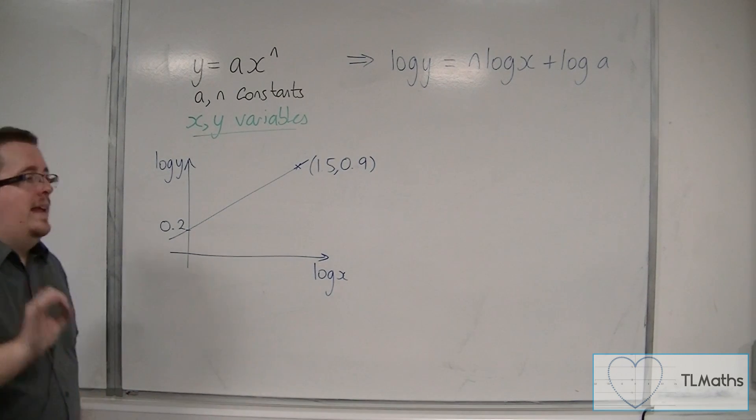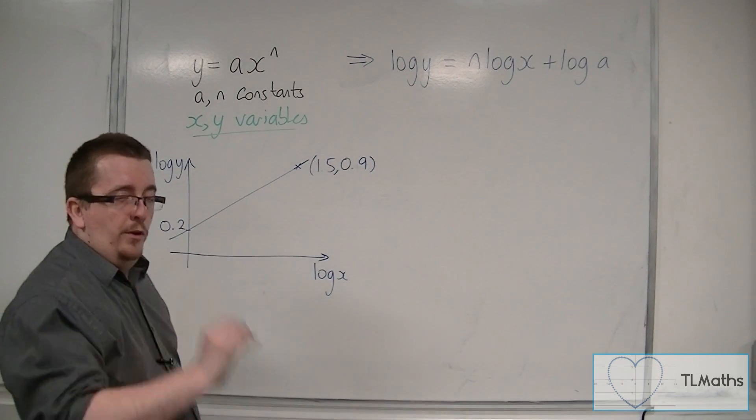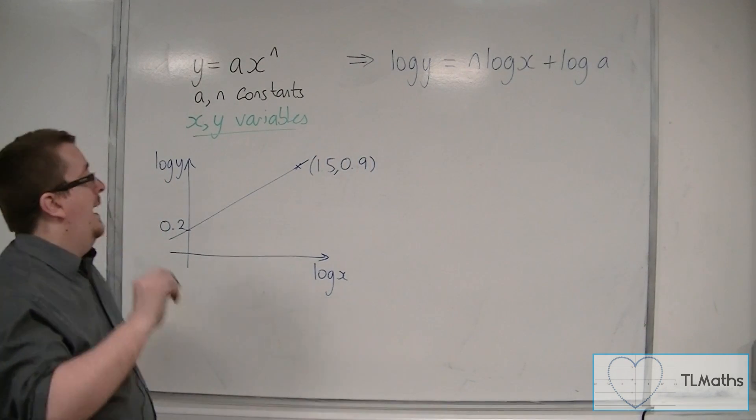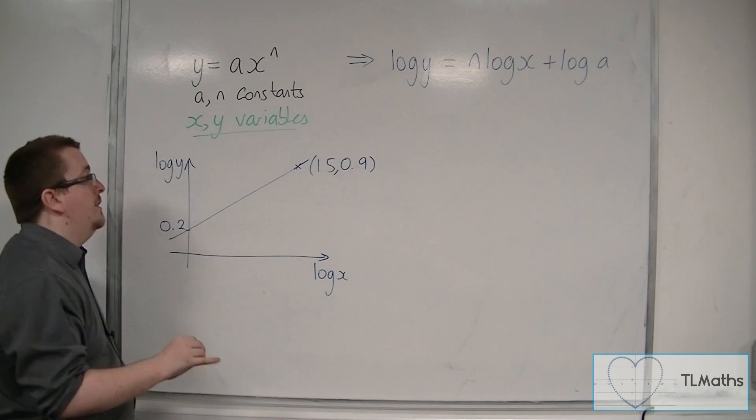So now, let's say that I've been able to plot my points, and what's happened is that I can now draw a nice straight line that goes through the points.